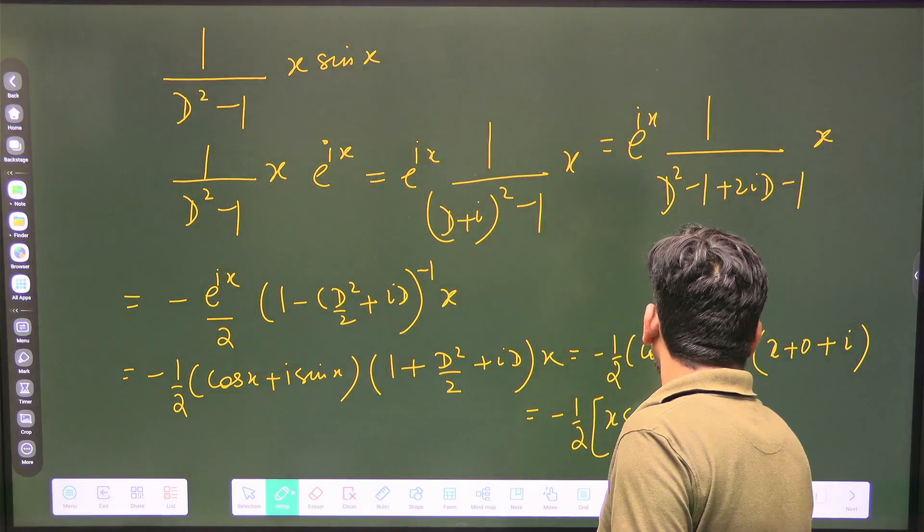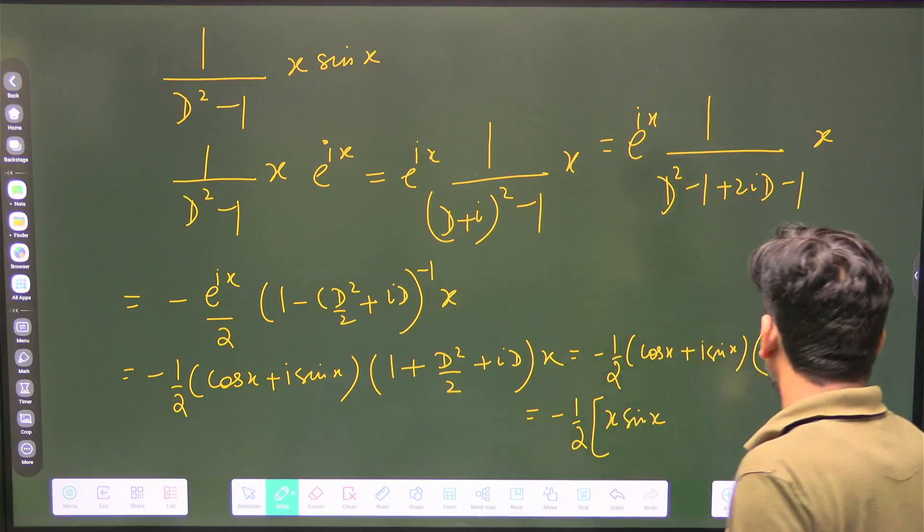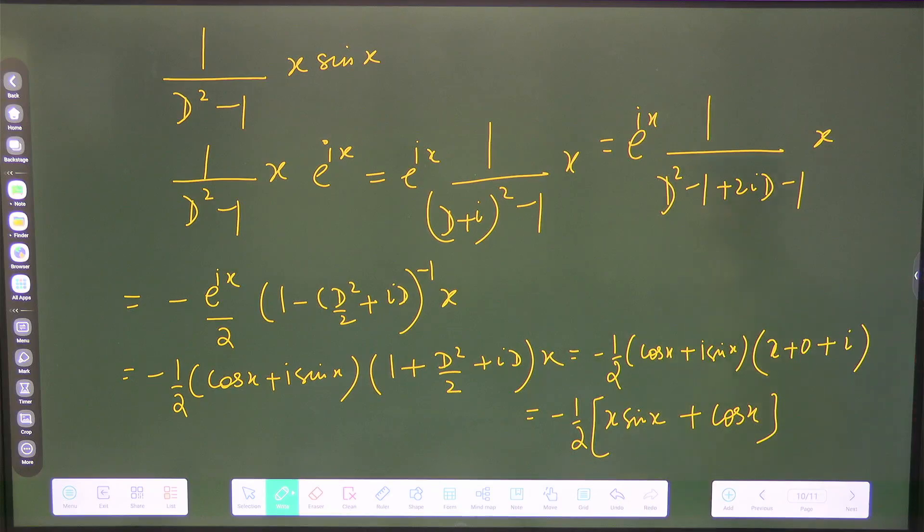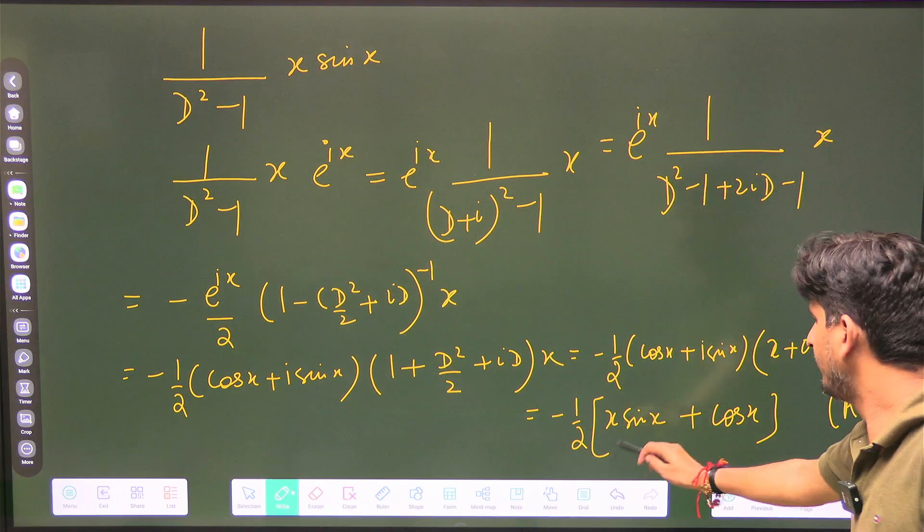Now take the imaginary part. It will be -1/2, so first one is x sin x we will get, and second one will be cos x. This we will get. So this is your answer and I think the option was A, so A option is correct: -1/2(x sin x + cos x).